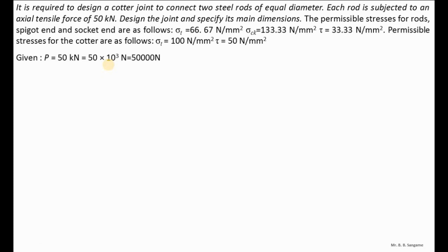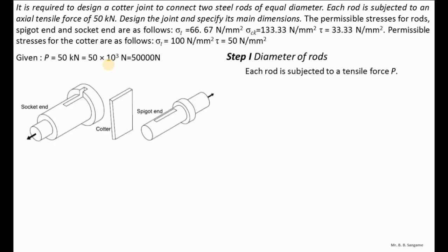First we are going to calculate the diameter of the rods, as the rods are subjected to axial tensile force. In this figure you can see the socket, the spigot, and the cotter — we are going to find the dimensions of all of these.